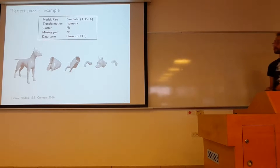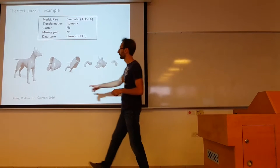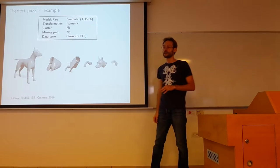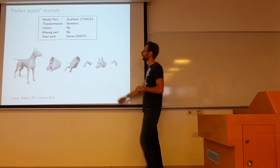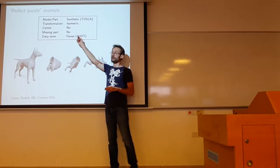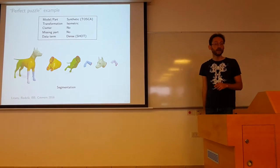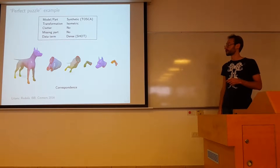Just a few examples. So here we have a puzzle of four pieces. And if we try to assemble them, in this case, all the data are synthetic. Basically they are cut from a dog shape from the TOSCA dataset. The corresponding probe functions we use are SHOT descriptors. This is how the segmentation looks like. And this is how the correspondence works. Very good correspondence.